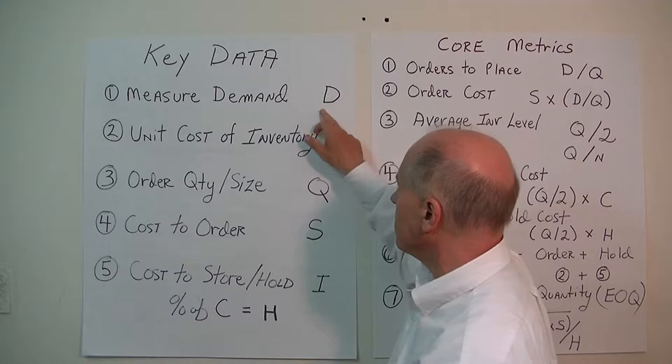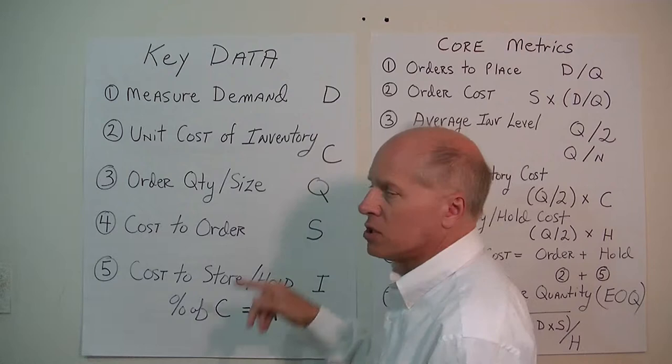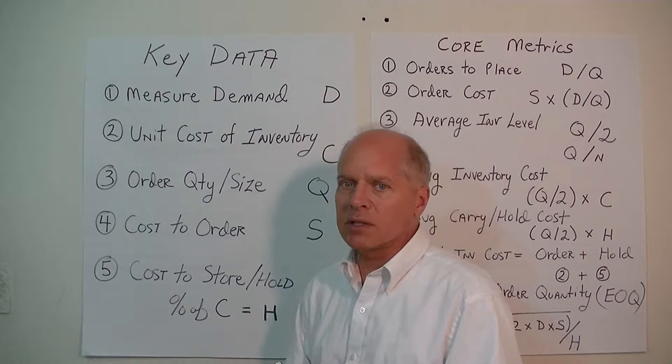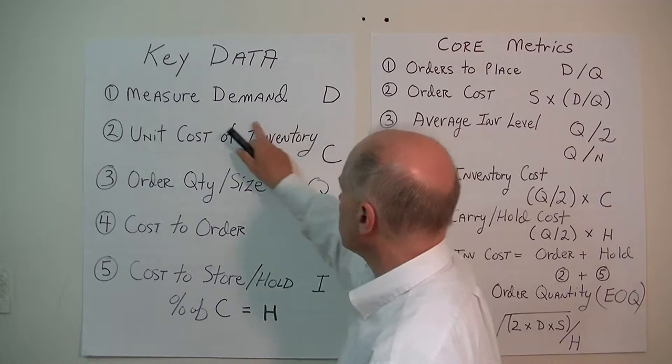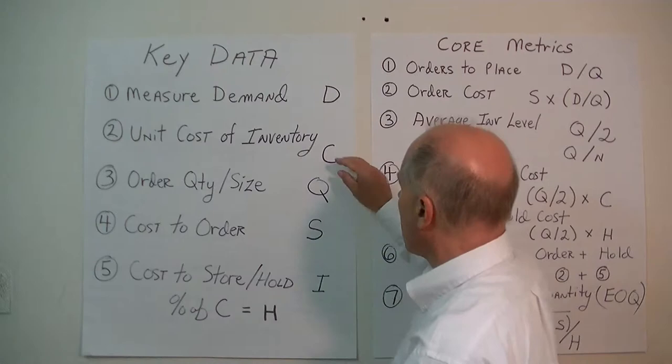The second data point you must have is the unit cost for each inventory item. For example, if you buy pencils from a vendor for 50 cents each and sell them for 75 cents, that unit cost of 50 cents has to be in your inventory system. We need to know the unit cost of every inventory item. So these two data points — D for demand and C for unit cost — are a must.